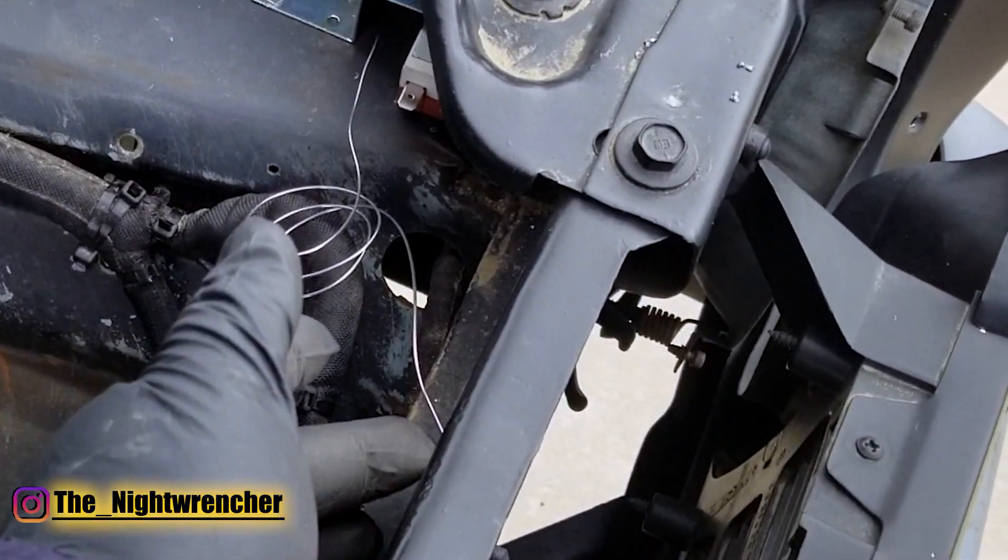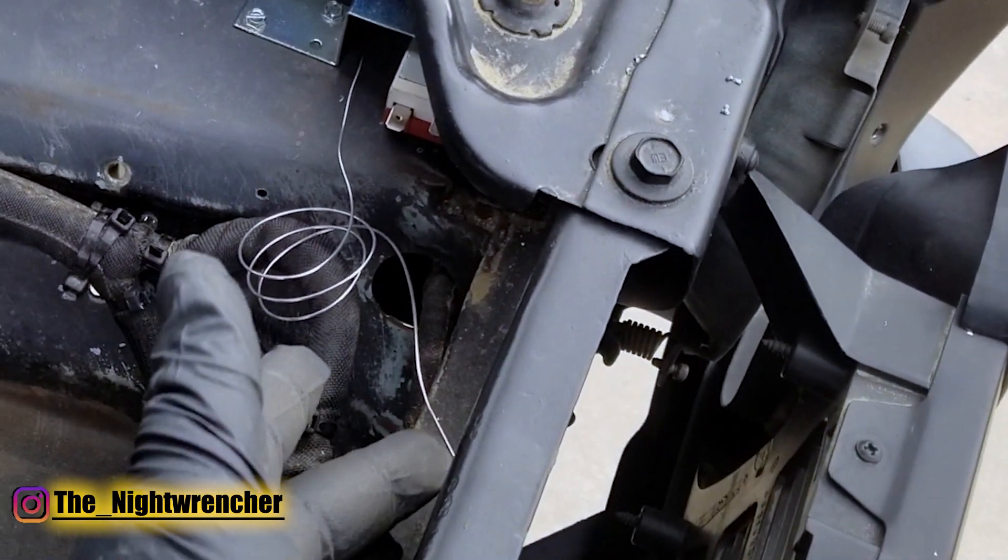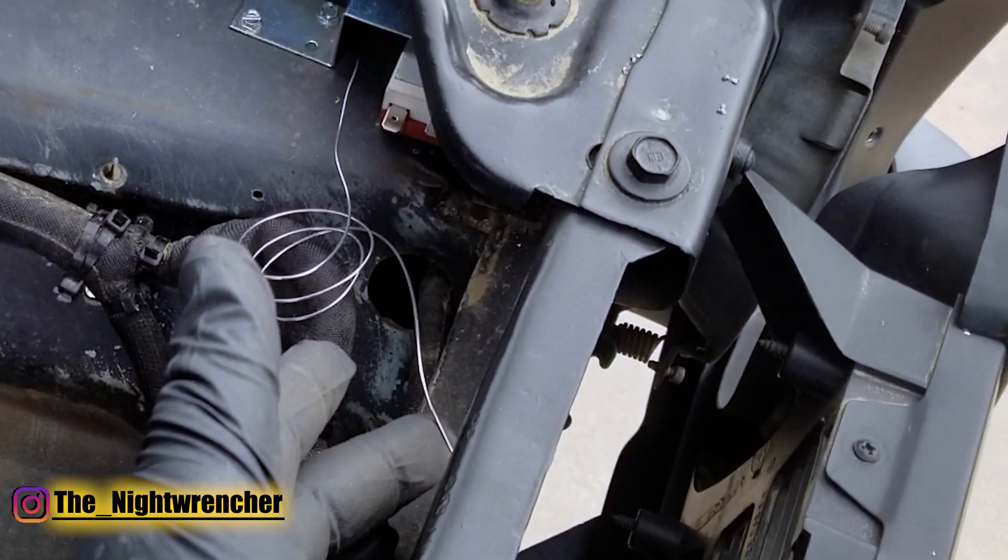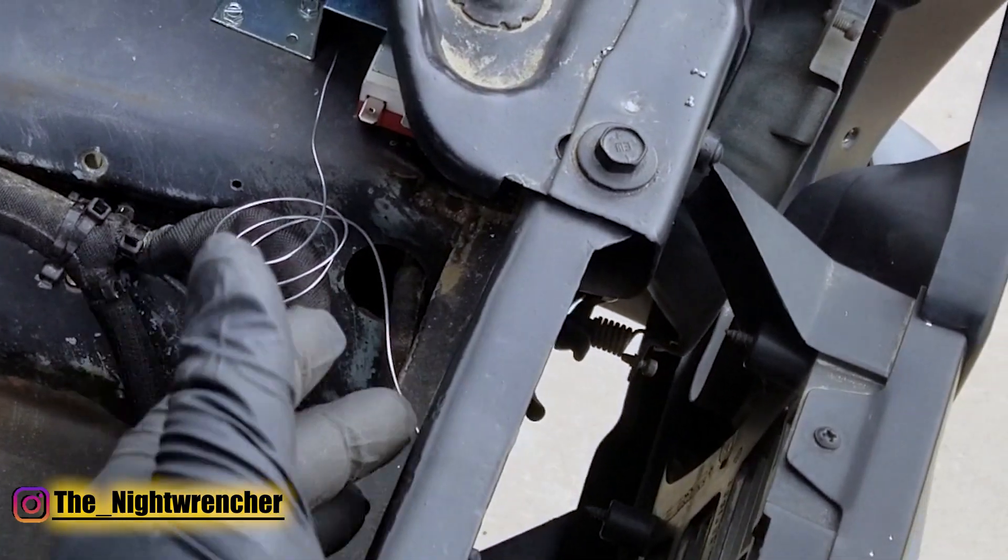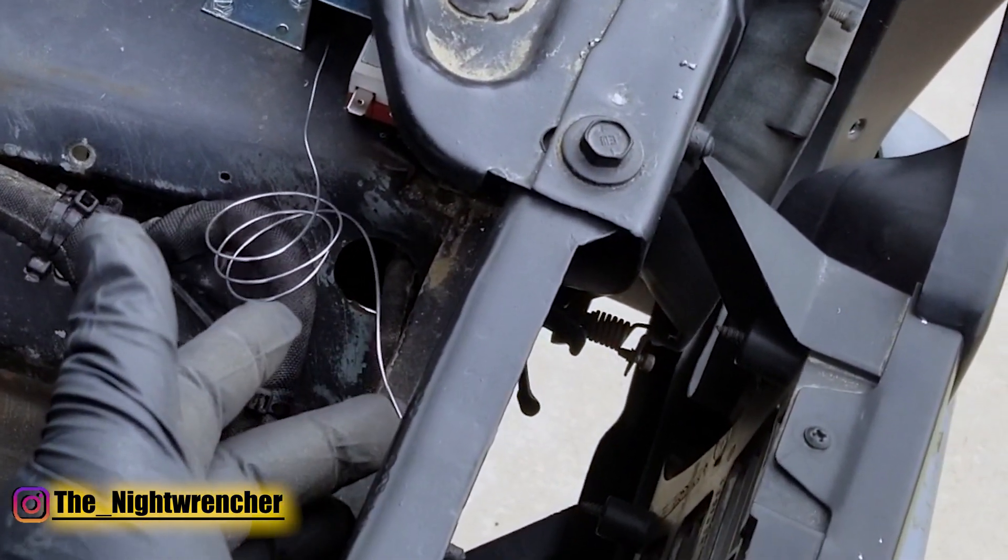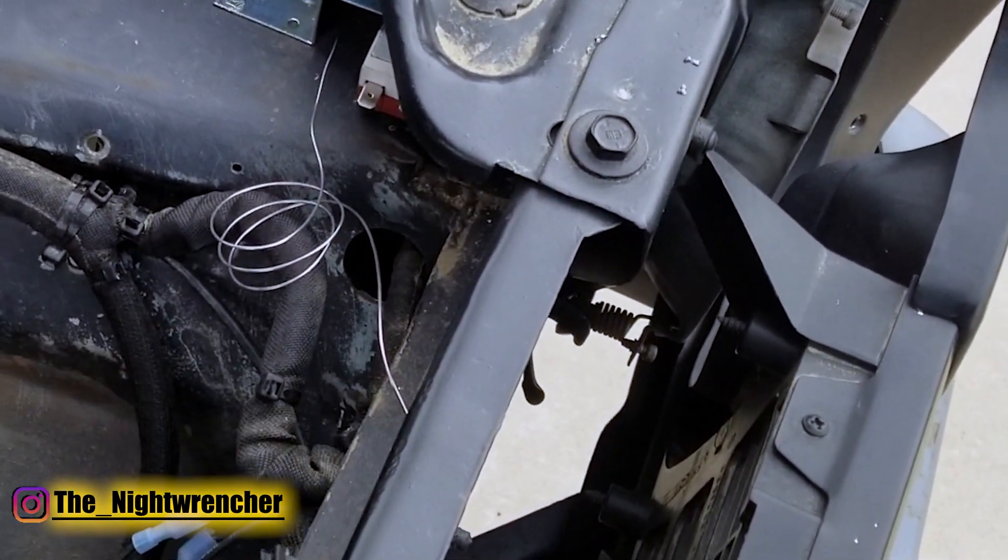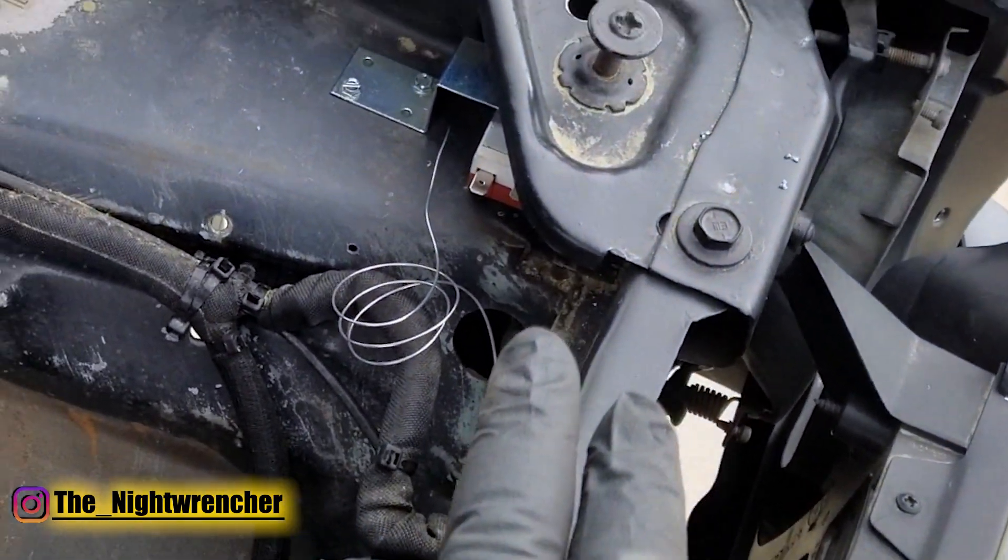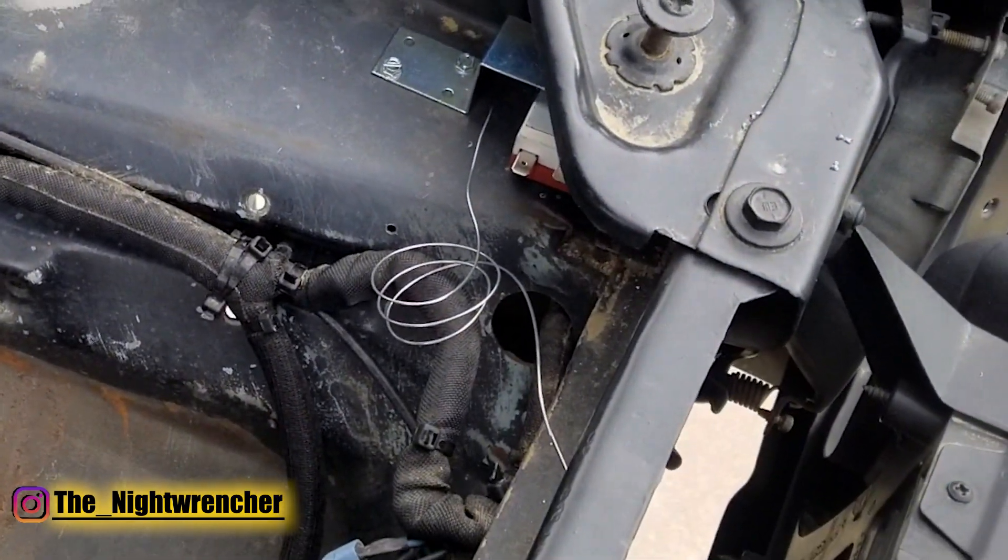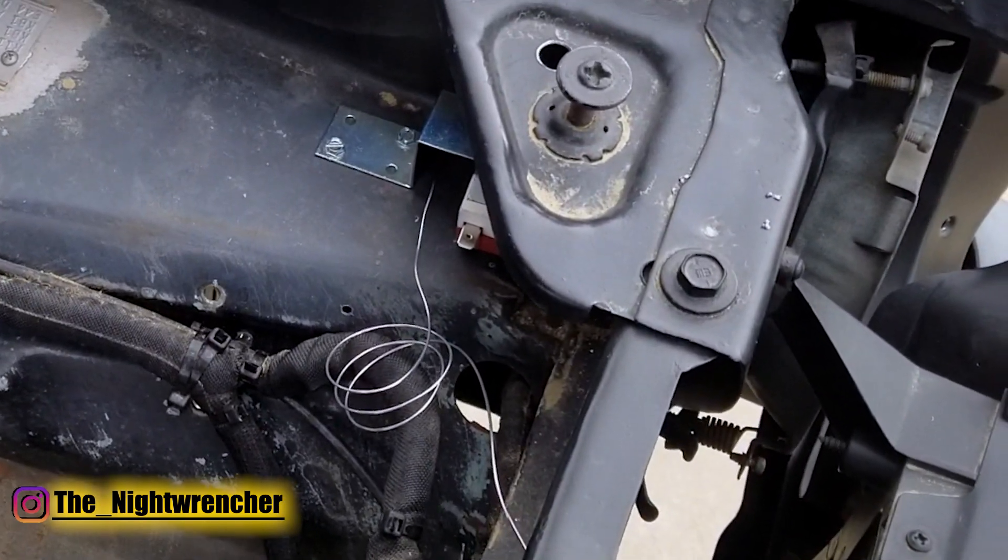A couple things to note about this wire is that it's not supposed to be touching any kind of metal or edges because with the vibrations of the vehicle it's actually going to wear into the wire and eventually destroy it. We're going to wrap it with something to keep it from getting destroyed, but before we do that we're going to be installing the relay harness along with the thermostat.